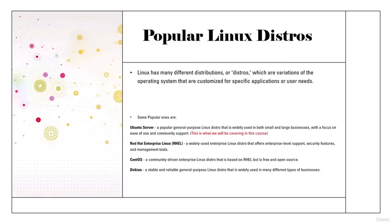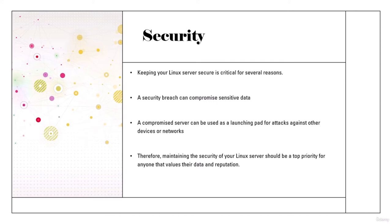Tux is a penguin character and the official brand character of the Linux kernel. Linux has many distributions or distros — variations of the operating system customized for specific applications or user needs. Some popular ones are Ubuntu Server, which we're going to cover in this course; Red Hat or RHEL; CentOS; and Debian. I challenge you to do a quick Google on Linux distros and just see how many are available.